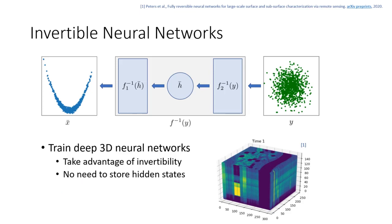The invertibility of these neural networks has the big advantage that for training you do not have to store any of the hidden states, making this a very memory efficient approach. Because you can recompute all the hidden states just from the final output, you can in principle have a neural network that is memory independent of its depth. The only thing you do have to store are the weights of the respective layers. This should allow you to train very deep networks, or networks that work on 3D images, video, or very high resolution data.